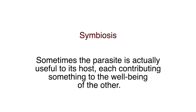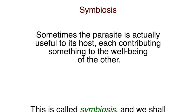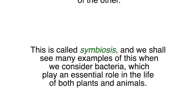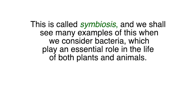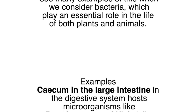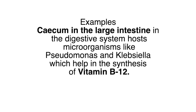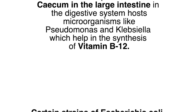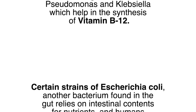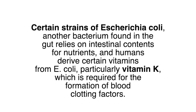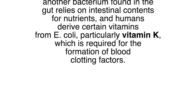Symbiosis: Sometimes the parasite is actually useful to its host, each contributing something to the well-being of the other. This is called symbiosis, and we shall see many examples when we consider bacteria which play an essential role in the life of both plants and animals. For example, the cecum in the large intestine hosts microorganisms like Pseudomonas and Klebsiella which help in the synthesis of vitamin B12. Certain strains of Escherichia coli found in the gut rely on intestinal contents for nutrients, and humans derive certain vitamins from E. coli, particularly vitamin K, which is required for the formation of blood clotting factors.